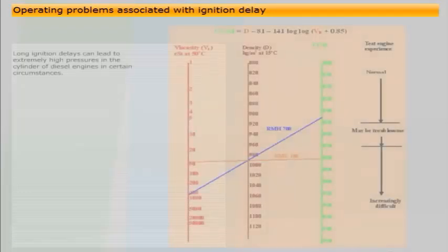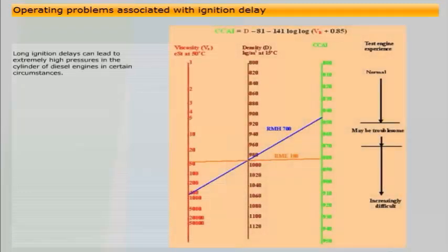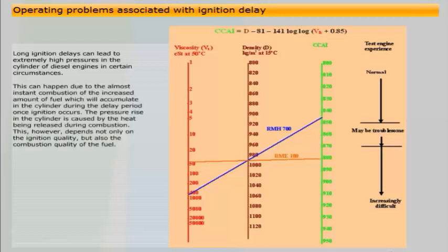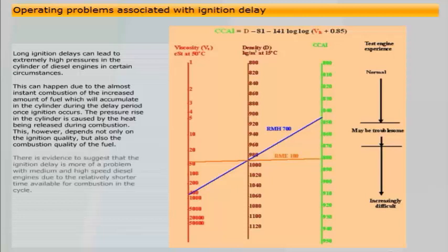Long ignition delays can lead to extremely high pressures in the cylinder of diesel engines in certain circumstances. This can happen due to the almost instant combustion of the increased amount of fuel which will accumulate in the cylinder during the delay period once ignition occurs. The pressure rise in the cylinder is caused by the heat being released during combustion. This, however, depends not only on the ignition quality, but also the combustion quality of the fuel. There is evidence to suggest that the ignition delay is more of a problem with medium and high-speed diesel engines due to the relatively shorter time available for combustion in the cycle.